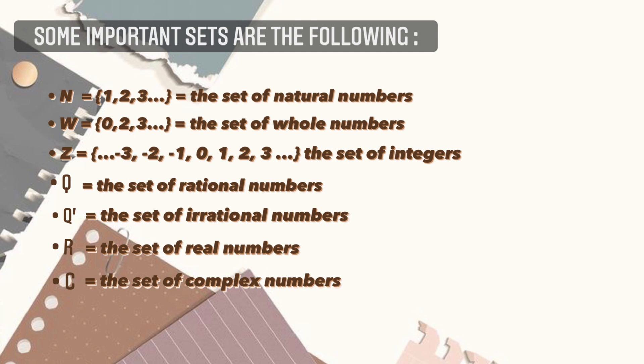Next is the letter Q, rational numbers, the terminating and repeating decimals. Next is Q prime, the set of irrational numbers, also called non-terminating or non-repeating decimals.